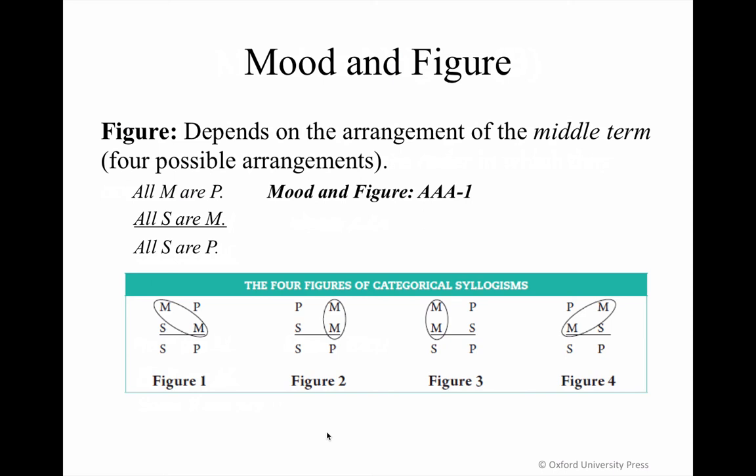It feels like a lot to juggle, but you'll get used to it. Just know that S is the subject of the conclusion and appears either in the subject or predicate position of the minor premise. The same goes for the major term — it appears in the major premise. In figures one and three, the major term appears in the predicate position of the major premise, but in figures two and four, it appears in the subject position.